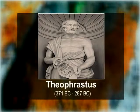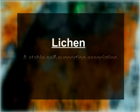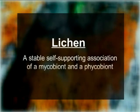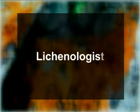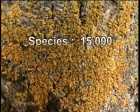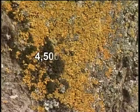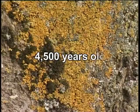The term 'lichen' was used for the first time by Theophrastus to denote a superficial growth on tree barks. In the dictionary of fungi, a lichen has been defined as a stable self-supporting association of a mycobiont and a phycobiont. The branch of botany concerned with the study of lichens is called lichenology, and a scientist who has specialized in this field is called a lichenologist. Lichens are a small group of curious plants with about 15,000 species, spread over 400 genera and 60 families. Some lichens are estimated to be more than 4,500 years old.